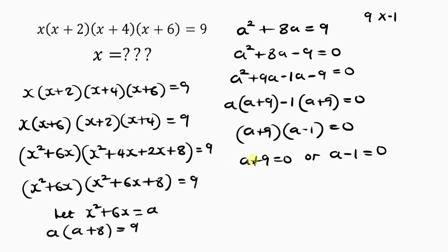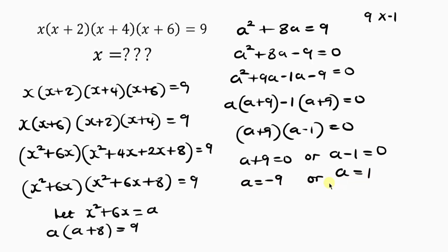When we move +9 to the other side, a = −9. And from the second equation, when −1 crosses the equal sign it becomes positive, so a = 1. We'll solve these two cases separately, starting with the first one.